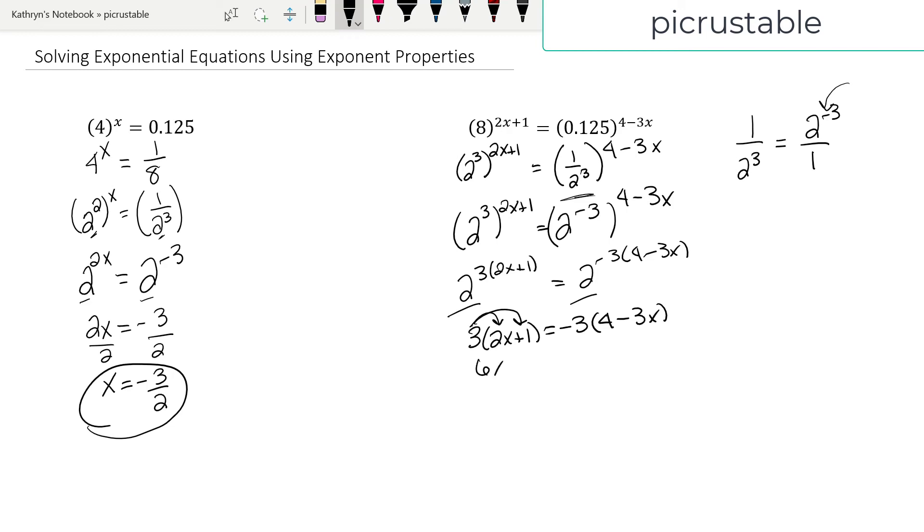3 times 2 is 6x. 3 times 1 is 3. Negative 3 times 4 is negative 12. Negative 3 times negative 3x is positive 9x.